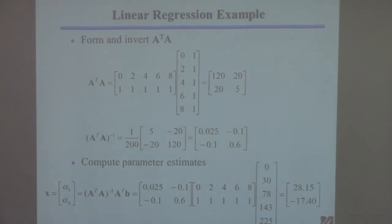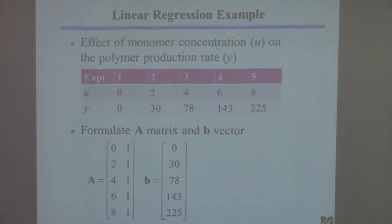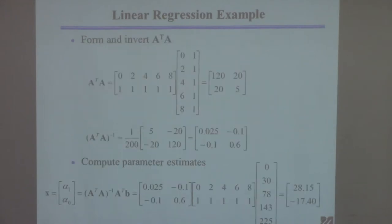Not too hard to do. The nice thing is that as long as you only have two unknowns, you can have as many experiments as you want, because no matter how many experiments you have, when you multiply A transpose times A it's always a two-by-two — as long as it's a linear equation.